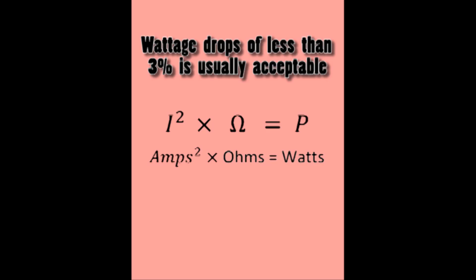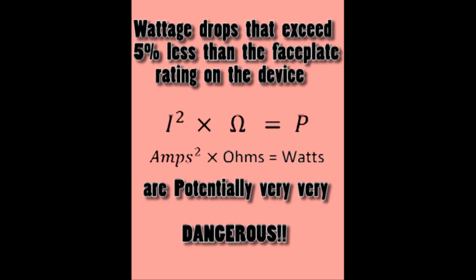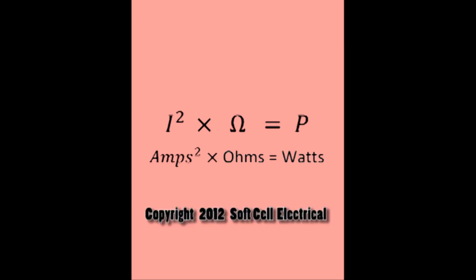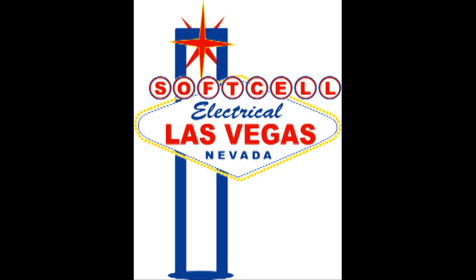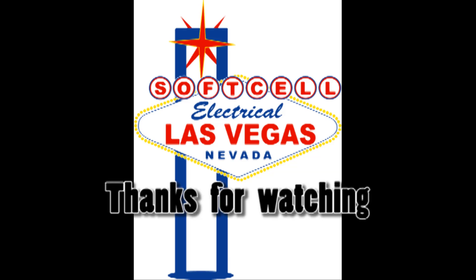One test you can perform that will check for a compromised heater to ground is to test for continuity between any heating electrode and ground. Continuity indicates a failure in the heating element and also a hazard to human life.